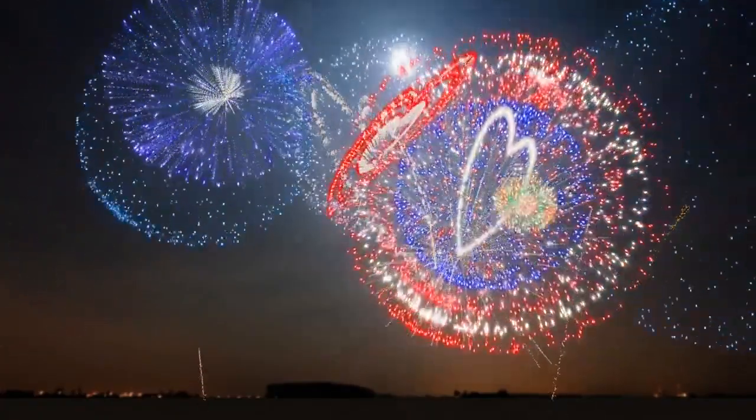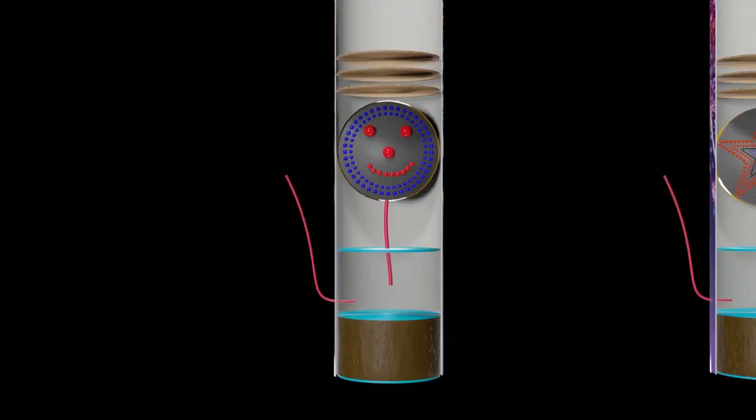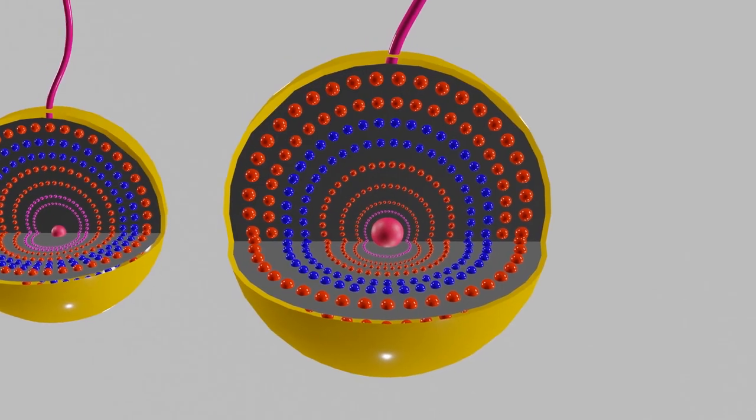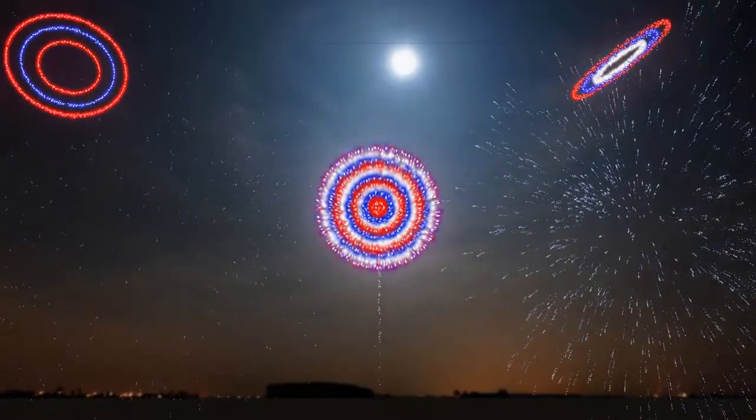To make different shapes in the sky, firework technicians simply set up different patterns of pellets inside the packaged shell. For example, if the pellets are in a circle shape, you get a circle display of colors.